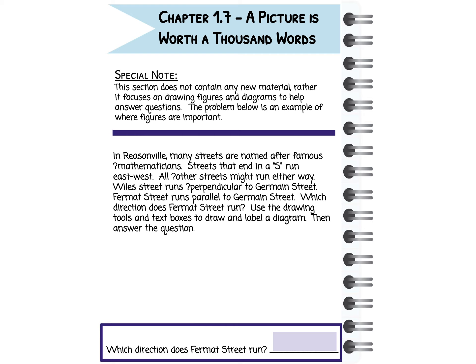Here's my example. In Reasonville, many streets are named after famous mathematicians. Streets that end in an S run east-west. All other streets might run either way.